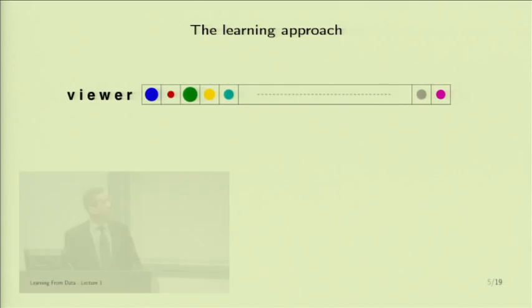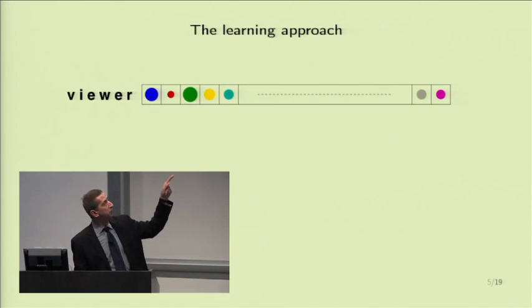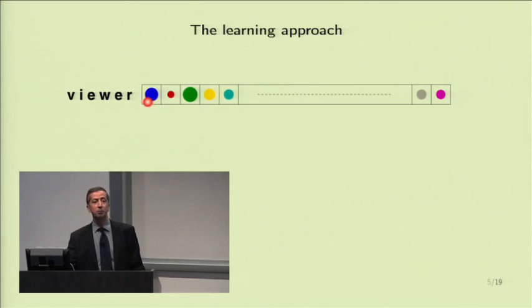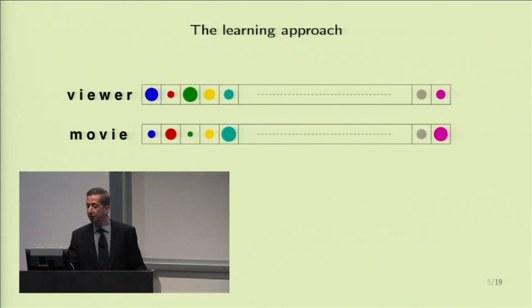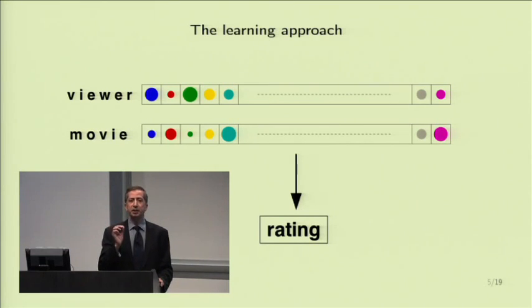The idea of machine learning is that you don't have to do any of that. You just sit down and sip your tea while the machine does something to come up with this figure on its own. In the learning approach, the viewer will be a vector of factors — different components for every factor, different from one viewer to another. The movie will also have corresponding factor values. The way we compute the rating is by combining these factor vectors and getting the rating. What machine learning does is reverse-engineer that process: it starts from the rating and tries to find what factors would be consistent with that rating.